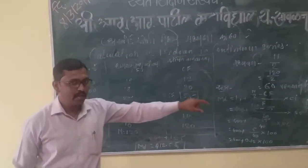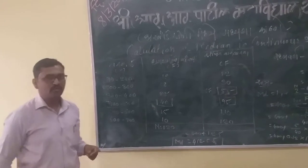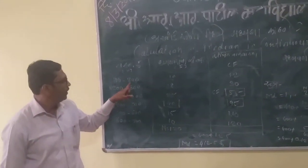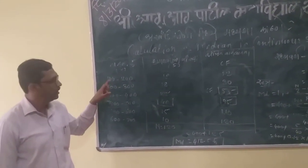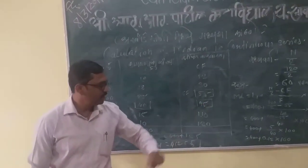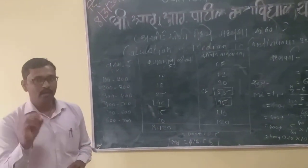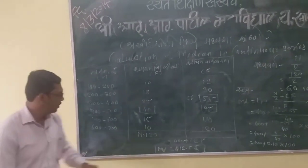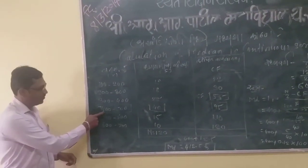CI is our class interval. To calculate class interval: upper limit minus lower limit, which gives us 100. Now we fill the values into our formula. L1 is the lower limit of the median class, which is 400.